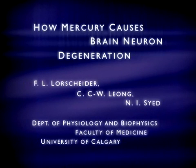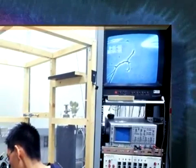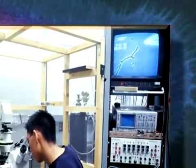How Mercury Causes Brain Neuron Degeneration. Mercury has long been known to be a potent neurotoxic substance, whether it is inhaled or consumed in the diet as a food contaminant.